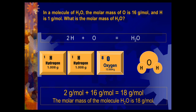In a molecule of water, the molar mass of oxygen is 16 grams and hydrogen is 1 gram. What is the molar mass of water? The formula is H₂O — 2 hydrogen and 1 oxygen. Add all the masses: 2 g/mol of hydrogen plus 16 g/mol of oxygen gives 18 g/mol. Therefore, the molar mass of water is 18 grams per mole.